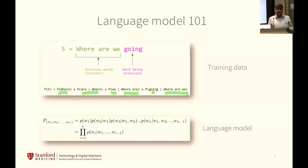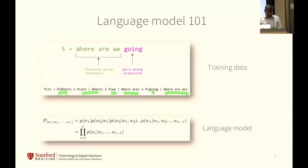Massive as in billions of parameters. Rumor has it GPT-4 is a trillion parameters — they don't exactly tell us how many, so who knows. But that's what a language model is.